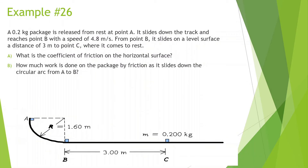A 0.2 kg package is released from rest at point A. It slides down the track and reaches point B with a speed of 4.8 m/s. From point B it slides on a level surface a distance of 3 meters to point C where it comes to rest. What is the coefficient of friction on the horizontal surface?